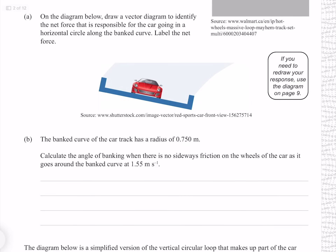On the diagram below, draw a vector diagram to identify the net force that is responsible for the car going in a horizontal circle along the banked curve, and label the net force. The car will experience a reaction force from the track. Its vertical component is counteracting the gravity force, leaving its horizontal component, which is unopposed and serves as our net force and also our centripetal force.